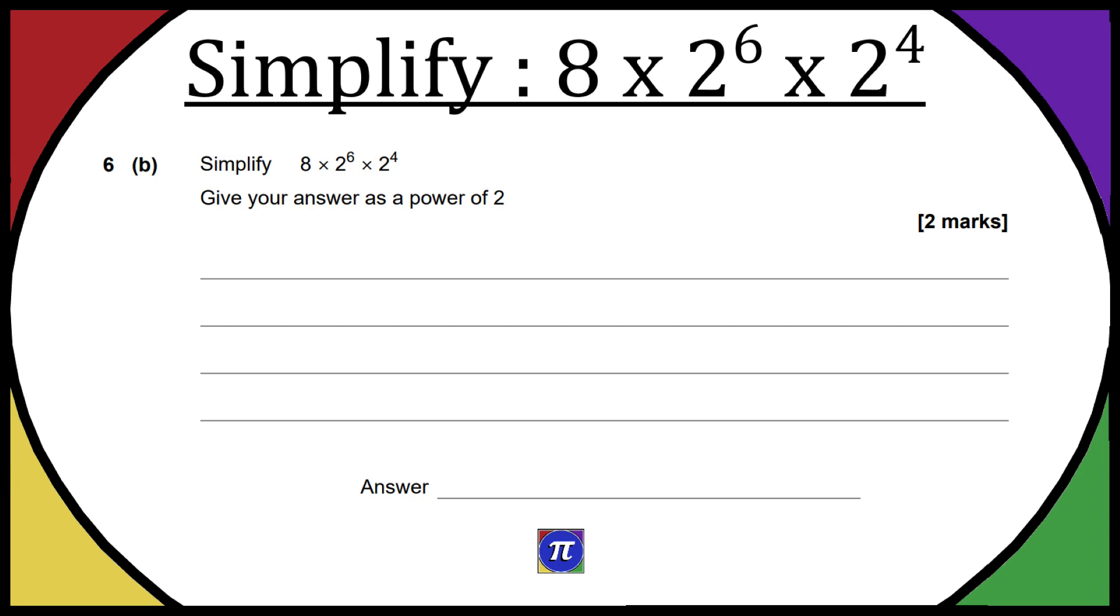Welcome to the video. I'm going to be tackling question 6b from the exam paper series we've been going through. Now, this question is simplify 8 times 2 to the power of 6 times 2 to the power of 4, and we need to give our answer as a power of 2.